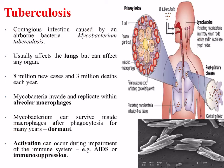Following antibacterial drugs, we will now briefly discuss anti-mycobacterial drugs, with particular attention to tuberculosis. Tuberculosis is a contagious infection caused by the airborne bacterium Mycobacterium tuberculosis. It usually affects the lungs but can affect any organ; there are an estimated 8 million new cases and 3 million deaths each year worldwide. Mycobacteria invade and replicate within the alveolar macrophages, and can survive inside macrophages after phagocytosis for many years in a state of dormancy. Activation can occur during impairment of the immune system, such as during immunosuppression or with conditions such as HIV/AIDS.